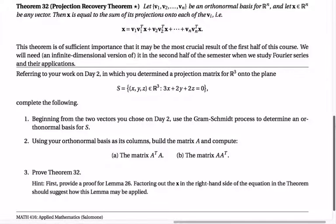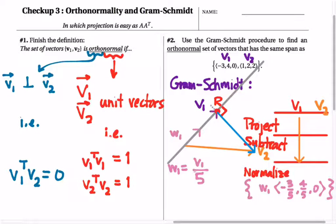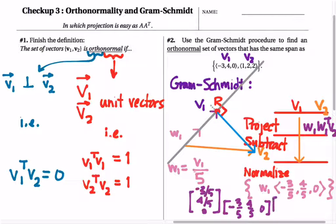So based on all of that, we know how to project V2 onto W1. All we need to do is take W1 transpose and multiply it by V2. So W1 is negative three-fifths four-fifths zero. I suppose I should make that a column vector. So negative three-fifths four-fifths zero. And then I have W1 transpose negative three-fifths four-fifths zero. And then I'm multiplying that by V2 and V2 is one-two-two.